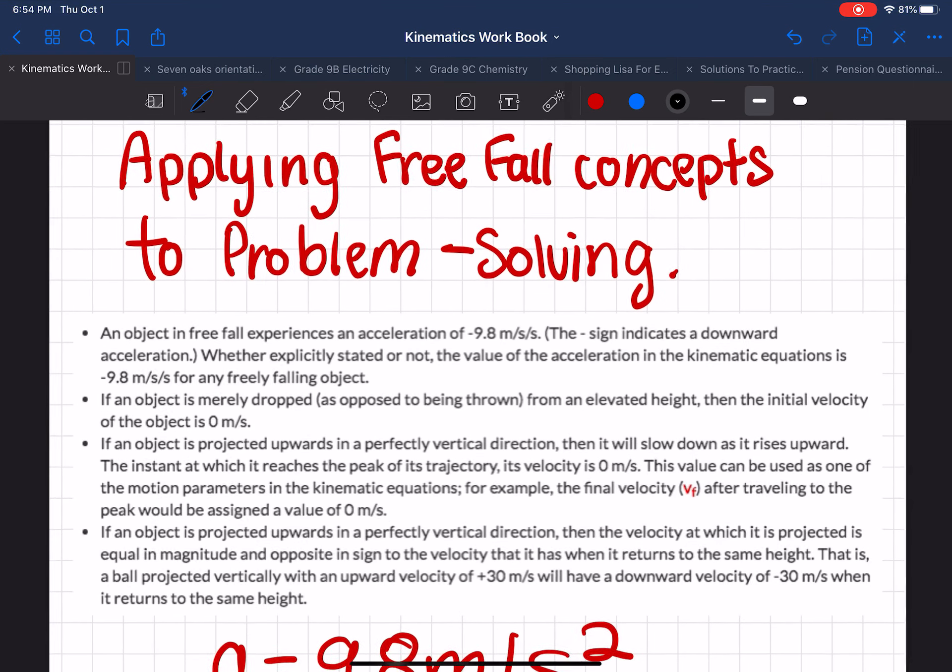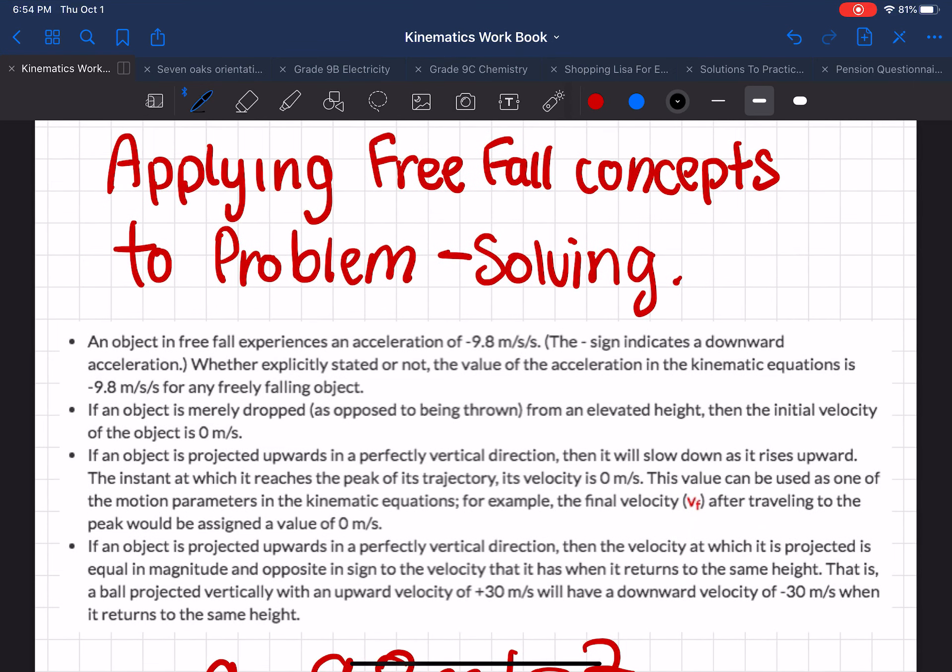An object in free fall experiences an acceleration of minus 9.8 meters per second squared. The minus sign indicates a downward acceleration. Whether it's stated or not, the value of the acceleration in the kinematic equation is minus 9.8 meters per second squared for any freely falling object.